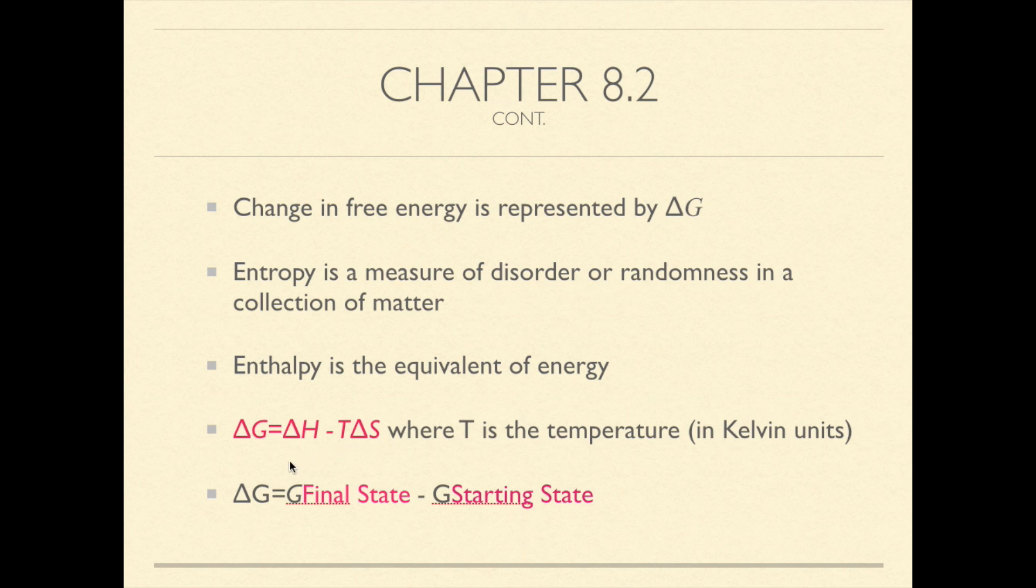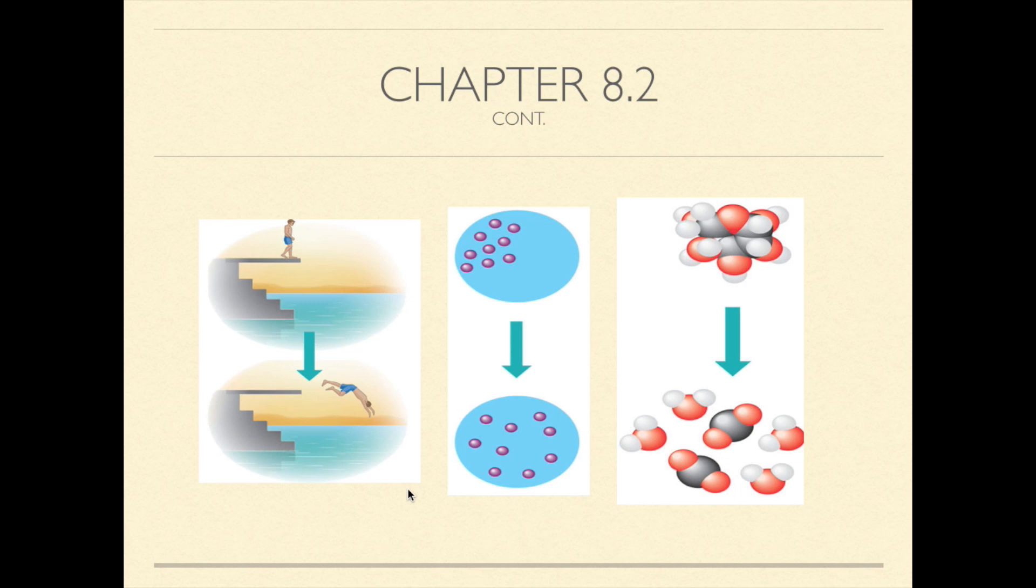It can also be represented by the difference between the free energy of the final state and the free energy of the initial state. What remains is the free energy available for work. Free energy can be thought of as a measure of the stability of a system.